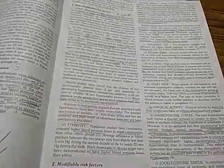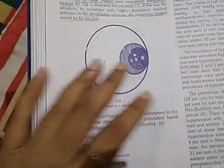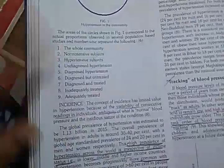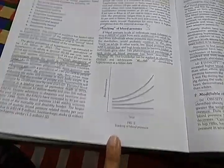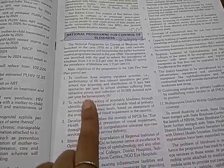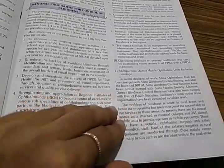Hypertension in the community — there's the rule of halves: half are diagnosed, something like that. Then blood pressure tracking, diabetes chapter, visual impairment and blindness, and the National Program for Control of Blindness. If they ask you about NPCB, you have to write a lot — objectives, and it is not going to be easy. It is an endless list of objectives and you have to read and remember all of them.